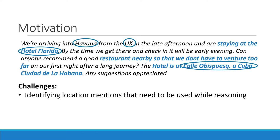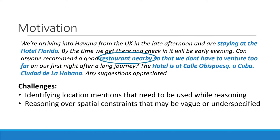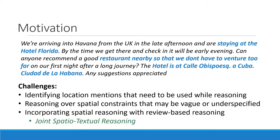This is challenging. For instance, there are multiple location mentions in this question. Which of these is required for reasoning? Not all of them — it doesn't matter where the traveler is arriving from if all you need to know are recommendations of places to eat near Hotel Florida. The constraints by themselves may be underspecified or vague; for example, what does 'nearby' mean? Finally, this needs to be incorporated with review-based reasoning where the reviews potentially describe each entity that could be a candidate answer.